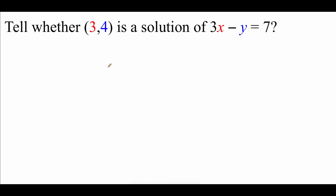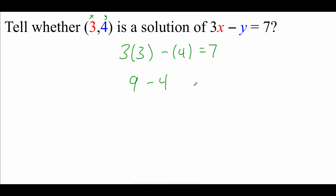I've color coded this to make it a bit easier. The first number in the ordered pair is our x value, so we plug 3 in for x — giving us 3 times 3. The second number is the y value, so we get minus 4, and we're hoping that equals 7. Well, 3 times 3 is 9, and 9 minus 4 is 5. Since 5 does not equal 7, this point is not a solution.